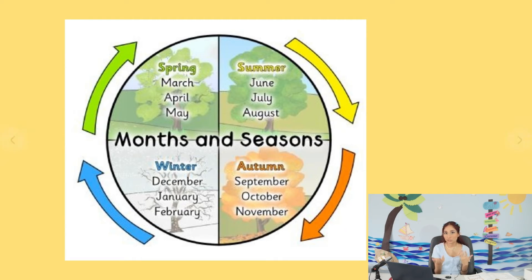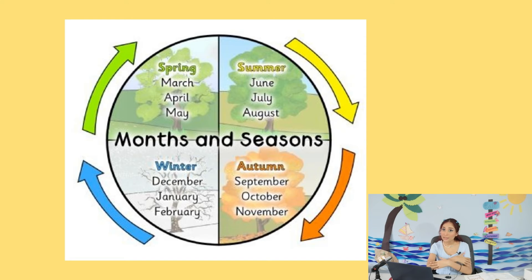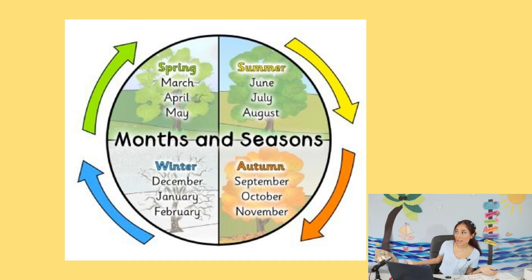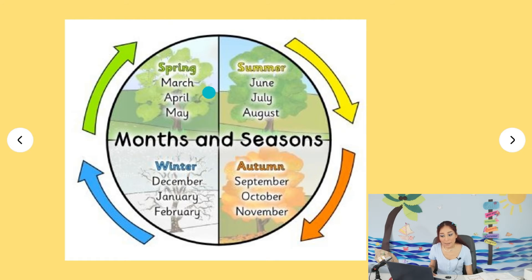Next we have spring, which also lasts three months. Because winter ends in February, spring is in March, April, and May. Spring is when the cold is going away and it gets warm — not as hot as summer, but warm. The birds start to fly, prepare their homes, the trees get greener, and we see lots of flowers and animals like butterflies.